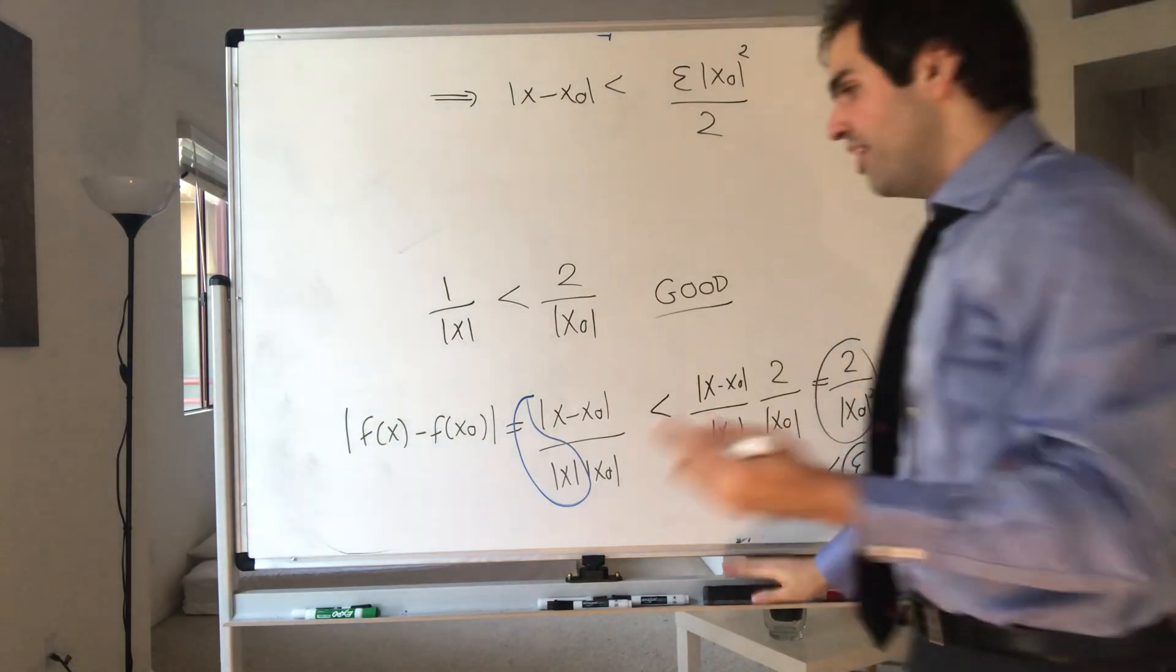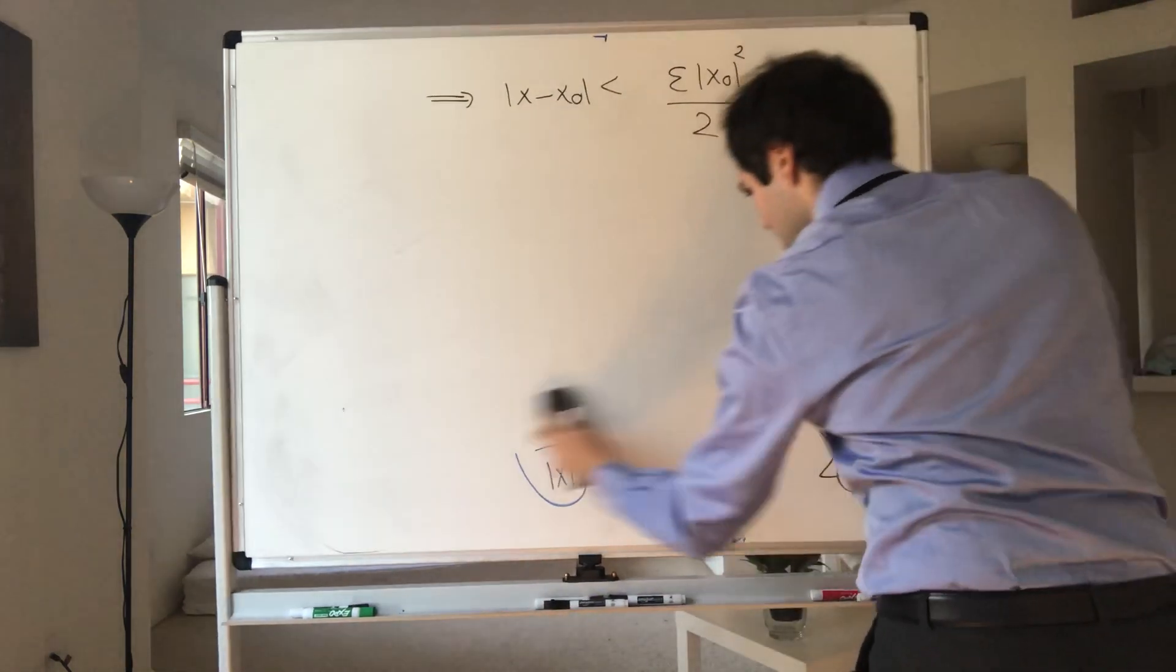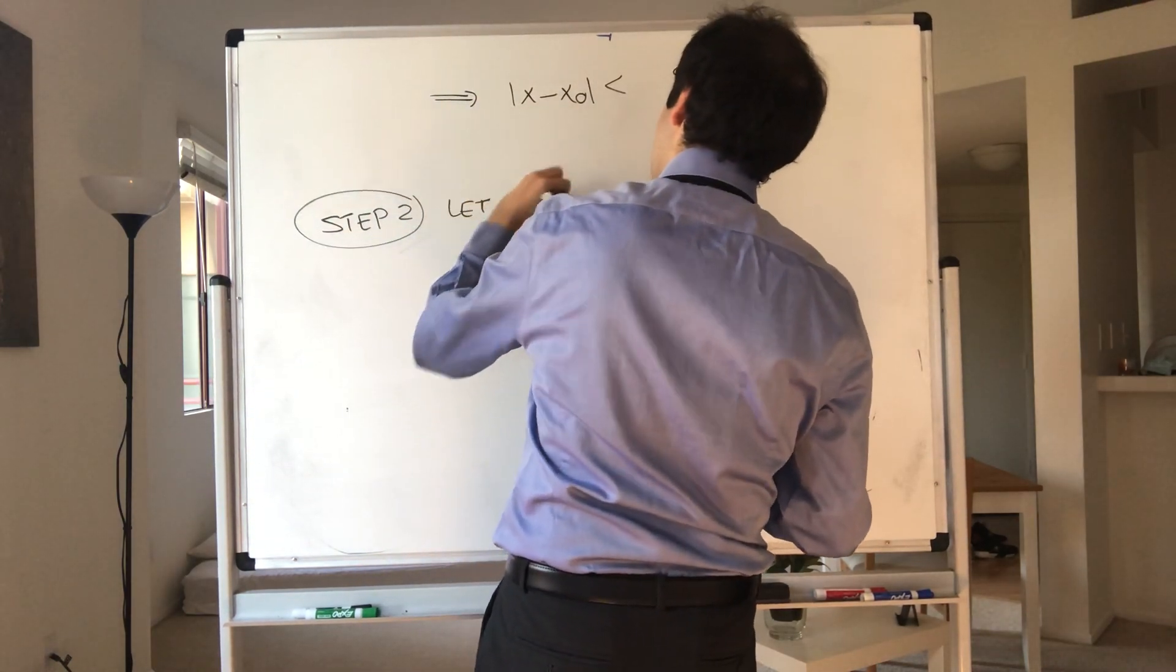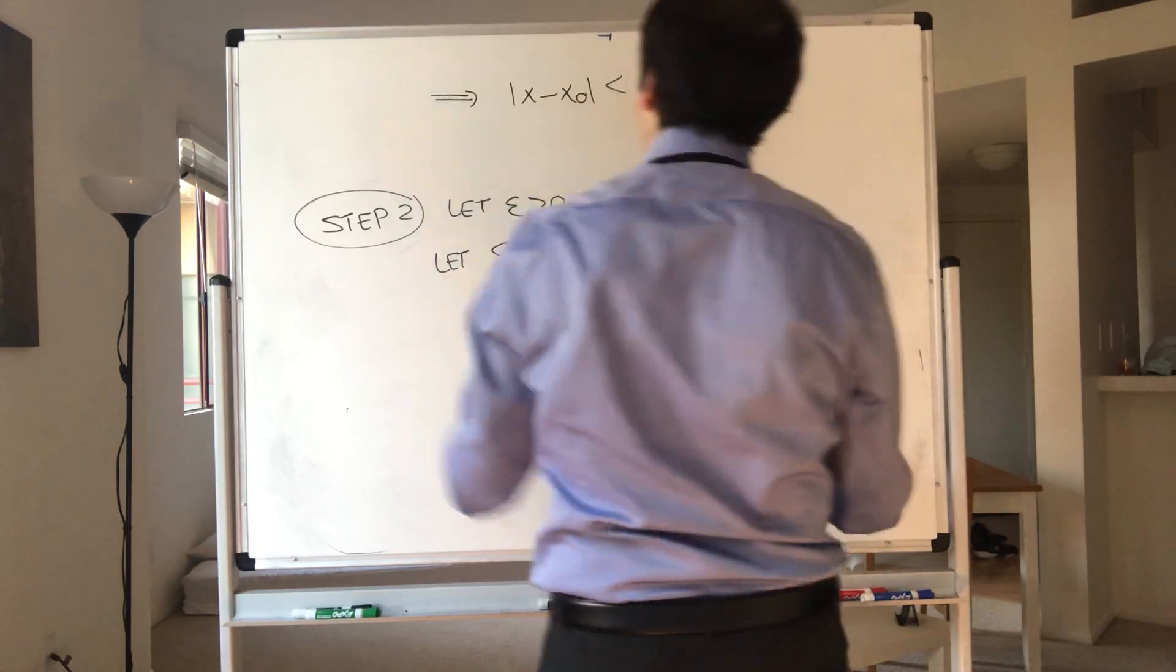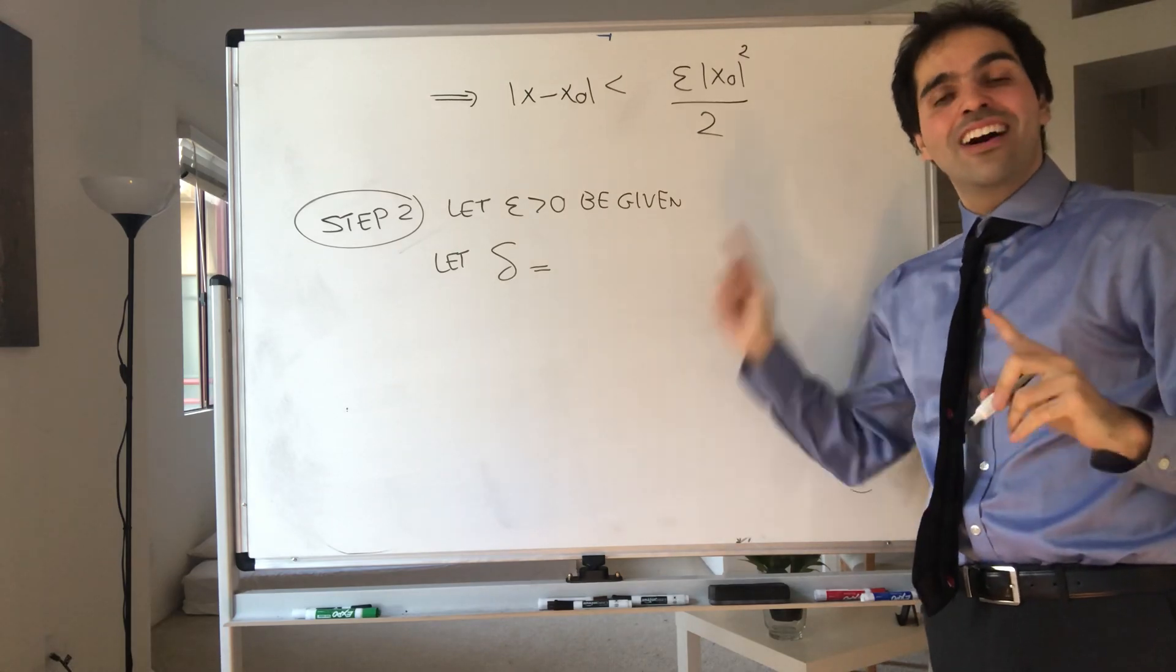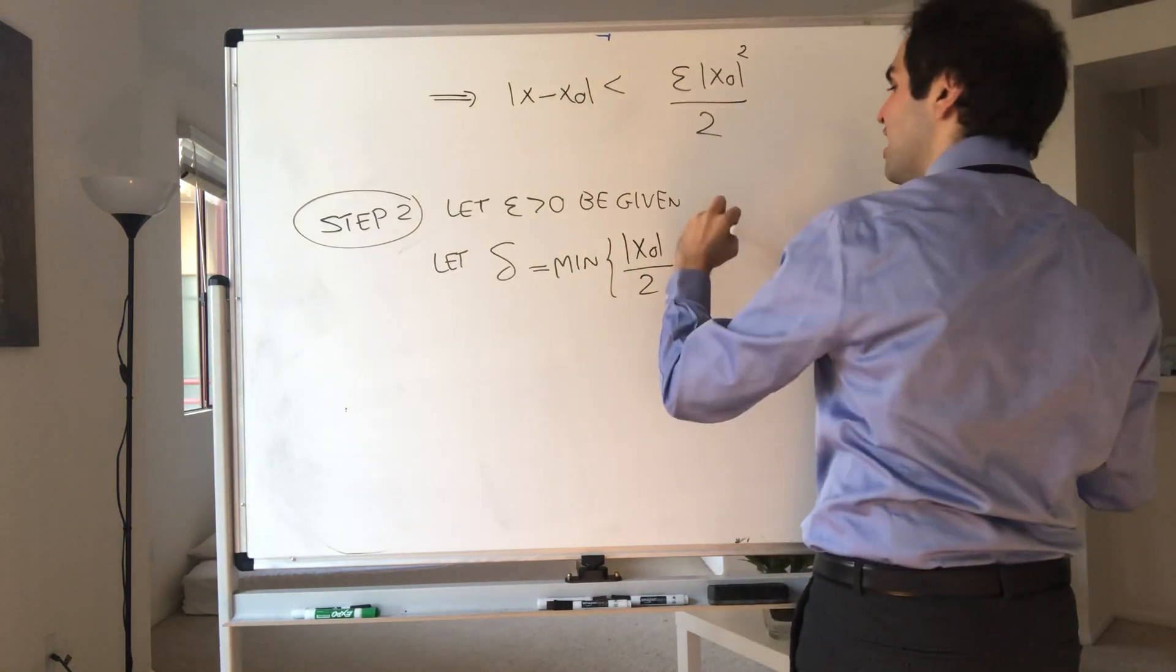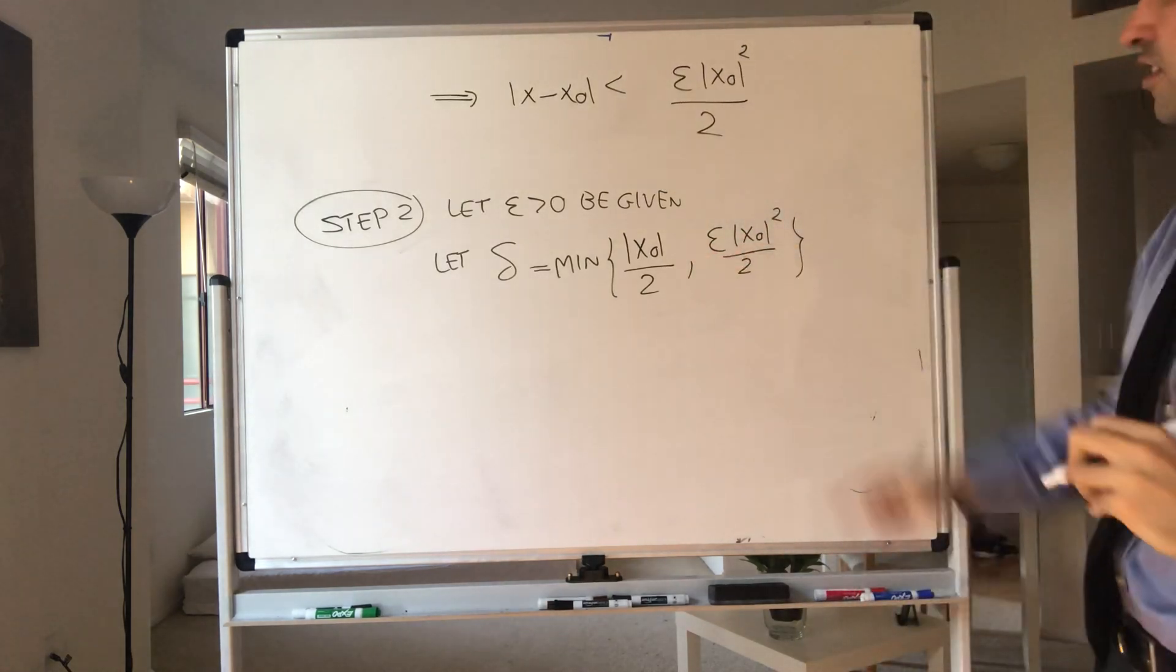Very good. And now, we found our delta, finally. And now, let's just do our proof. So let epsilon be given. And let delta, all right, careful, not just this. Because remember, at some point we assume x minus x naught is less than absolute value of x naught over 2. So we really need to choose the smaller one of the two, because we want both inequalities to be true.